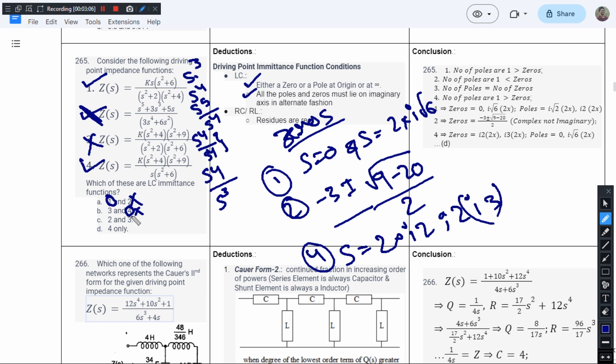So this cannot be the answer. And if you look at option D, it says only 4. Even though we have found that 1 can be the impedance function that belongs to an LC impedance function...